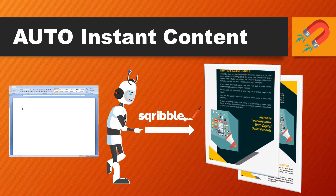This is a massive feature of Scribble. Scribble will allow you to populate your entire eBook with automatic instant content. This is the big one — they've got an incredible content engine and with just a few clicks it's going to fill out your entire eBook.